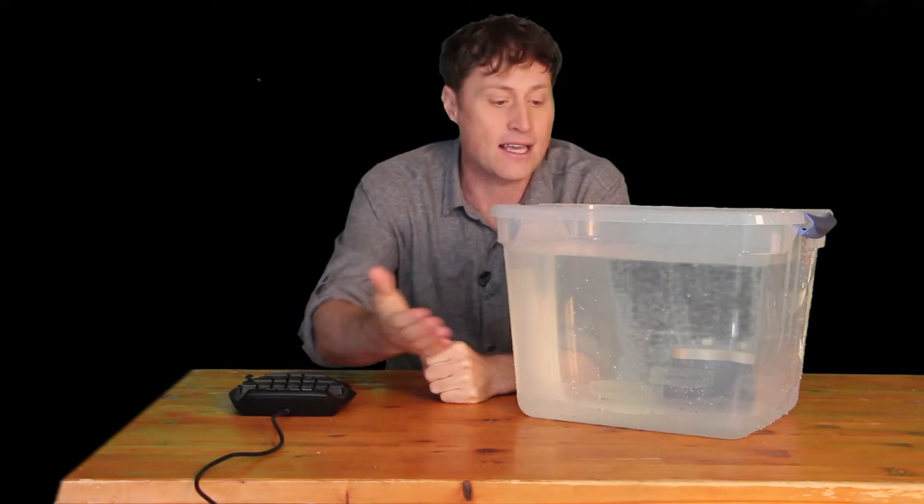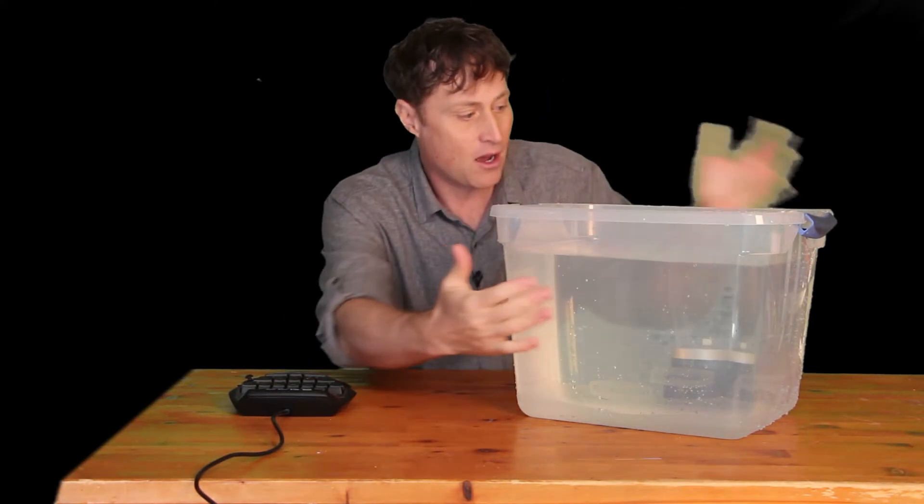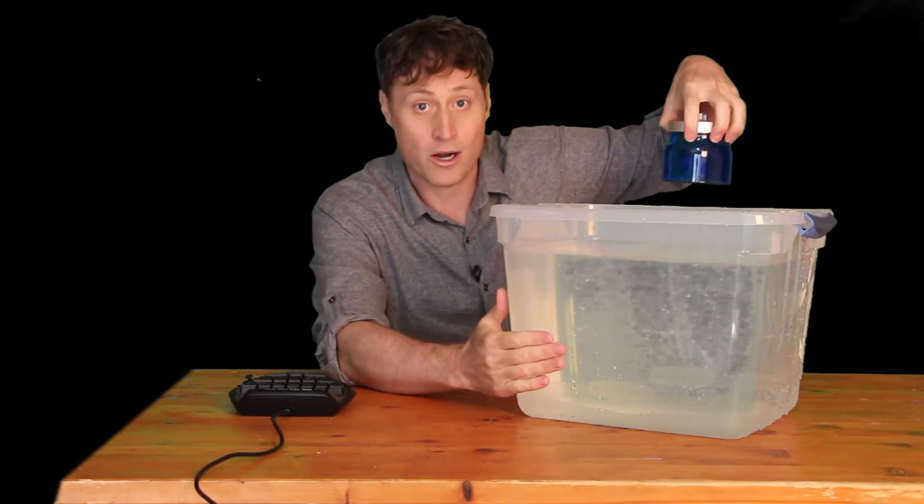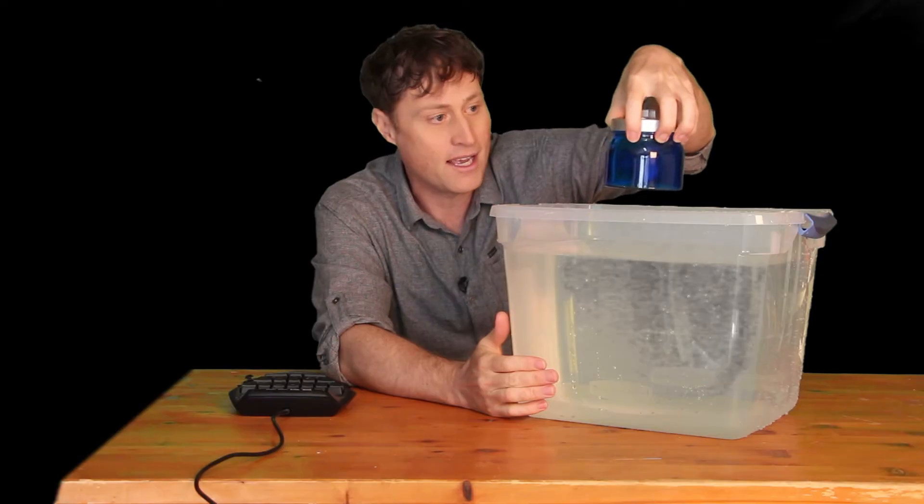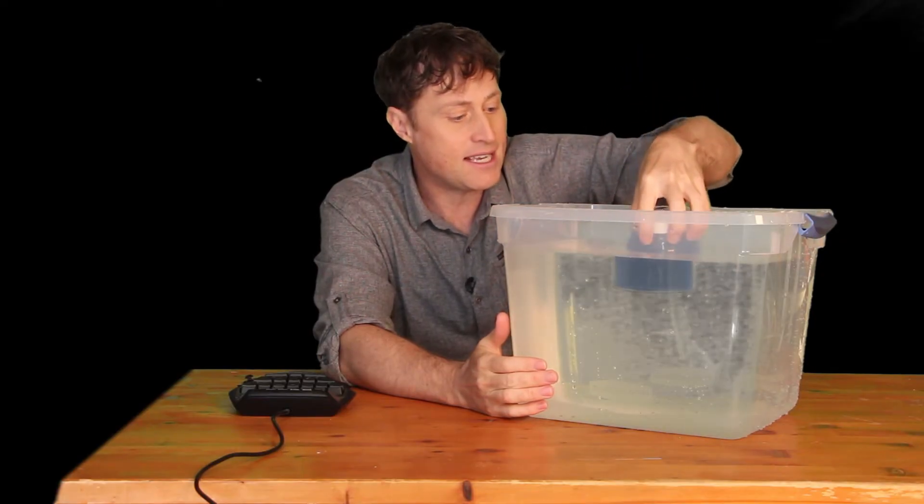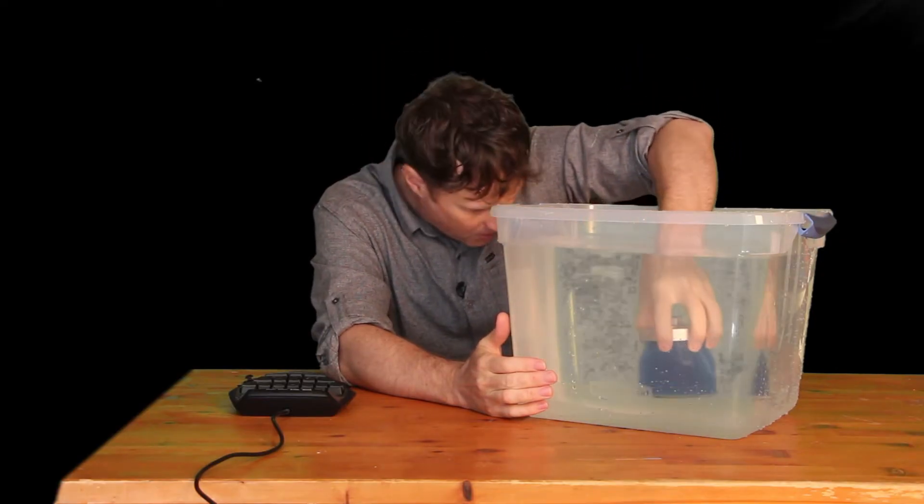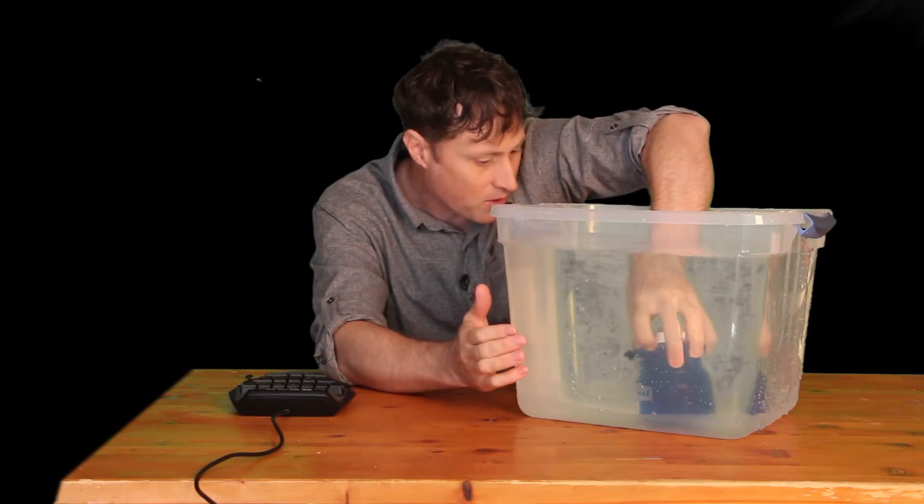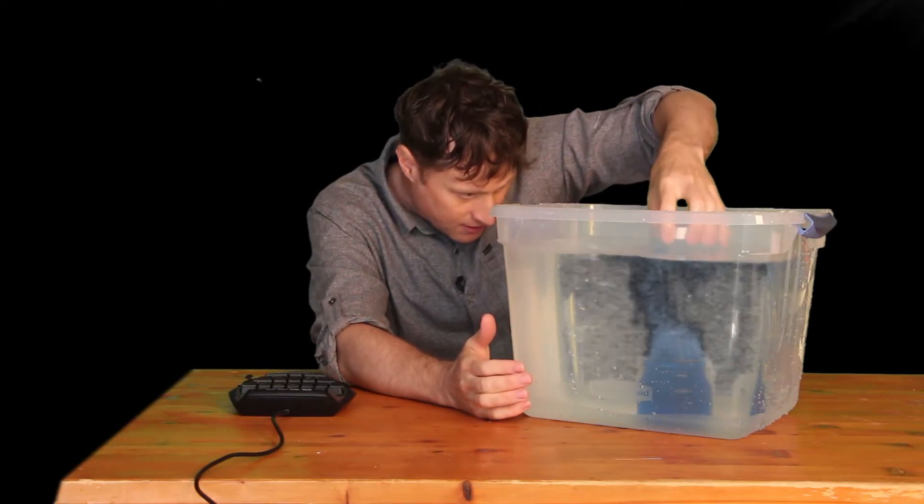Now because air and water are both fluids, we can demonstrate what that looks like using this tub of water. So say that this is the atmosphere, all the air in our atmosphere right here, and this is cold water by the way. And this hot water with blue food coloring in it is the heated air by the sun and the water vapor.